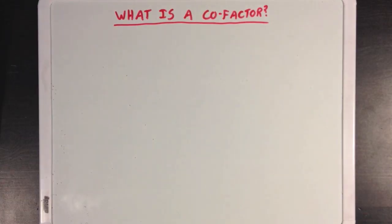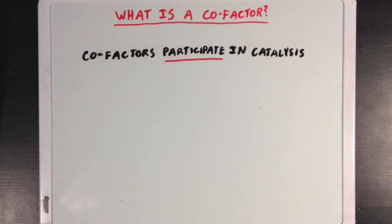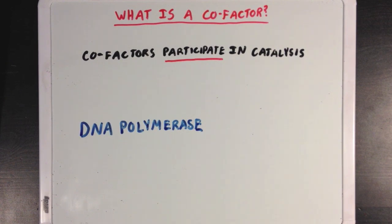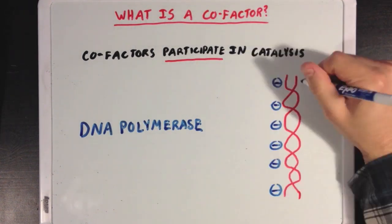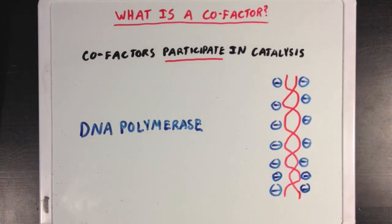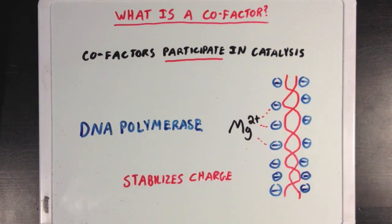Now cofactors are a little different from coenzymes. While coenzymes are only really involved in transferring different things from one molecule to another, cofactors are directly involved in the enzyme's catalytic mechanism. They don't strictly carry something like a coenzyme would, but might be stabilizing the enzyme or the substrates, or helping the reaction convert substrates from one form to another. A great example of this is with the enzyme DNA polymerase, which is responsible for helping synthesize new DNA during DNA replication. DNA polymerase uses a magnesium ion as a cofactor, which can use its big positive charge to stabilize all that negative charge on DNA. And you can see how this is different from a coenzyme, because instead of acting as a carrier molecule, the magnesium ion cofactor is stabilizing the DNA and is more directly involved in the actual catalysis.